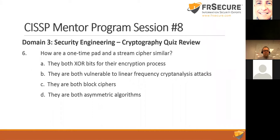How are a one-time pad and a stream cipher similar? Both XOR bits for their encryption process. They are both vulnerable to linear frequency cryptanalysis attacks — that's not true for the one-time pad. They are both block ciphers — by definition, the stream cipher is different than the block cipher, and the one-time pad isn't a block cipher. They are asymmetric algorithms — also incorrect. So A: they both XOR bits for their encryption process.